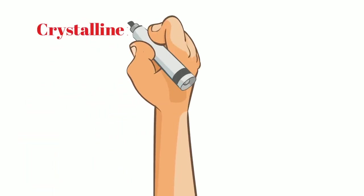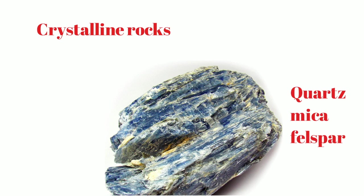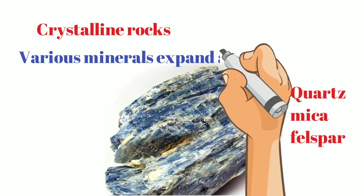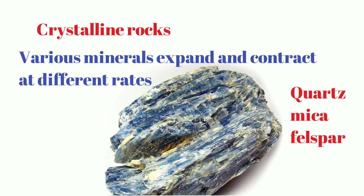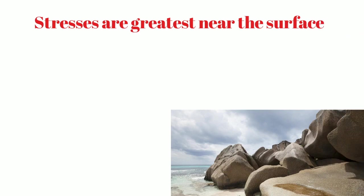In crystalline rocks, different minerals such as quartz, mica, and feldspar expand and contract at different rates. So there are additional stresses and disintegration. These stresses are most important at the corners and angles, causing rectangular blocks to develop sharp corners through this repeated process.